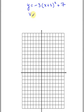So here our vertex, first of all, is (-2, 7). And here we see that it opens down.